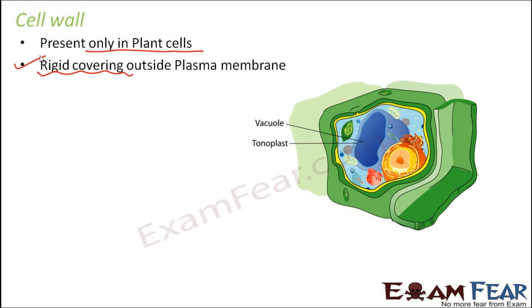If you look at a plant cell, this is how a plant cell looks like. The yellow colored boundary is the cell membrane, and just outside the cell membrane you have another green boundary — that is the cell wall.